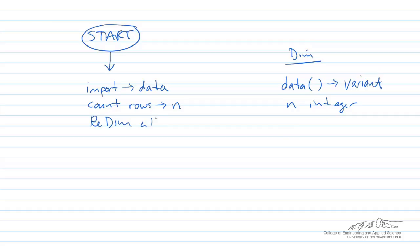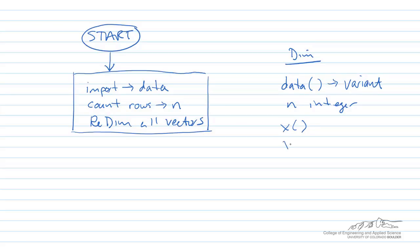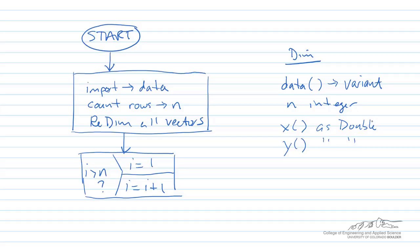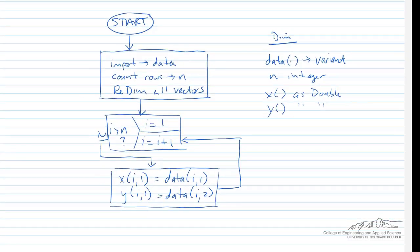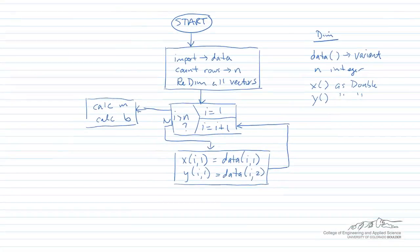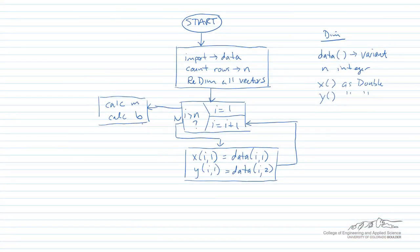We're going to re-dim all vectors. One of the vectors we're going to create is just going to be the x values, and we're also going to create the y values. So we're going to extract the first column from data and define that as our x vector, and extract the second column of our data array and define that as the y values. We're going to use a for loop to import the x and y columns from data. When we're done importing all of those values, we are going to calculate the slope and intercept.